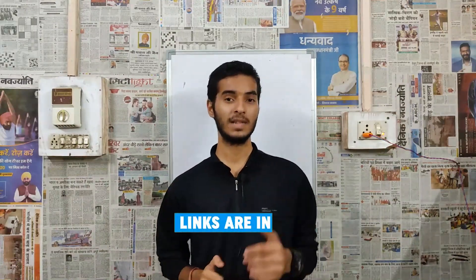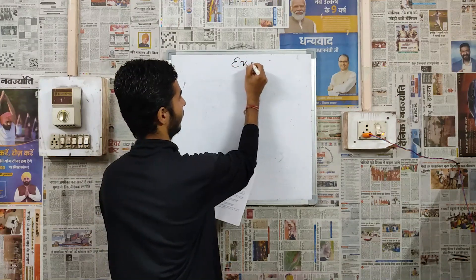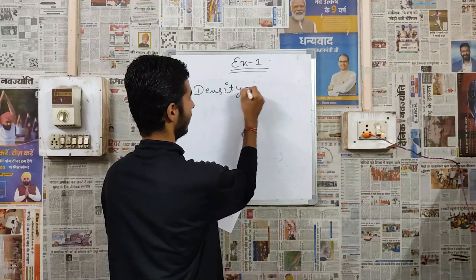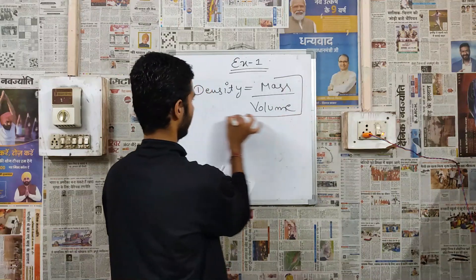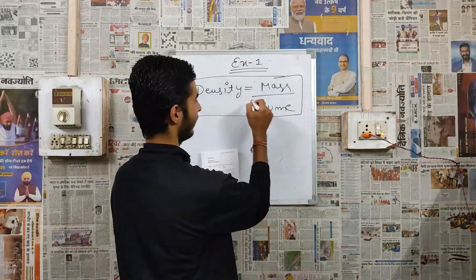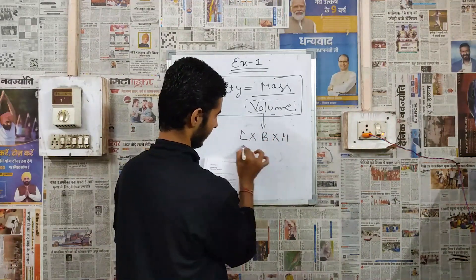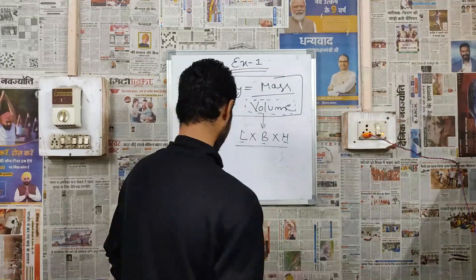Also check my description box for the notes, formula sheet, and many more things. Without wasting time, let's get started. We are going to start Chapter 1, Exercise 1: density and relative density. For density, you need to use one formula. Density equals mass upon volume.